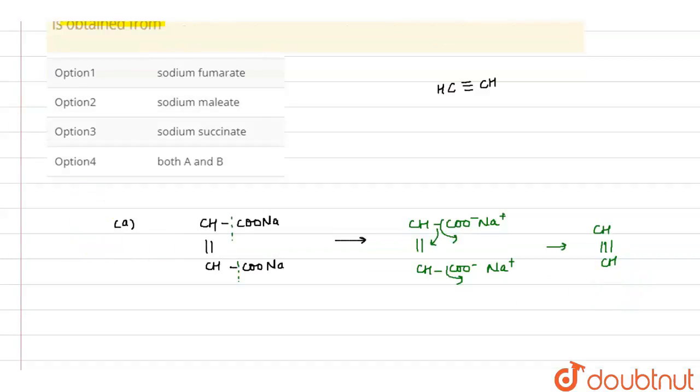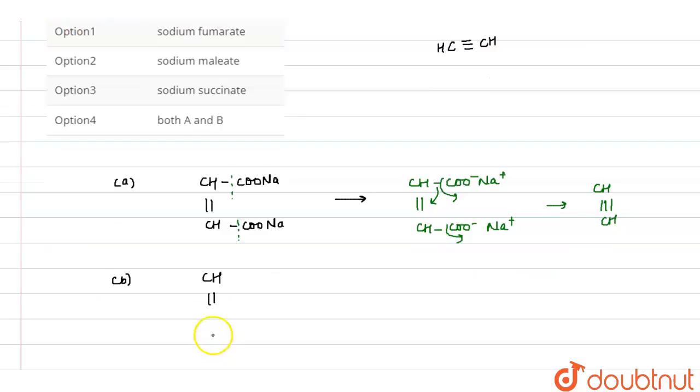Next thing is sodium maleate. And the structure of sodium maleate is same as fumarate. The only difference is in their cis and trans form. So here also, when electricity is passed through them, these get changed into CH COO⁻ Na⁺.